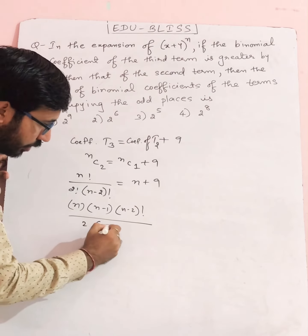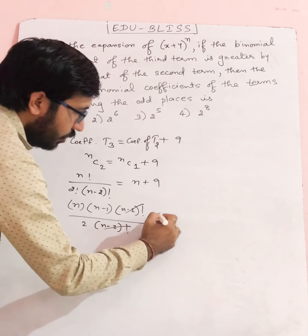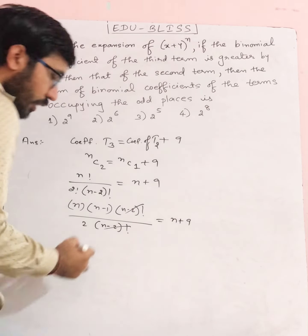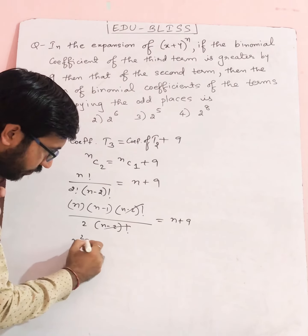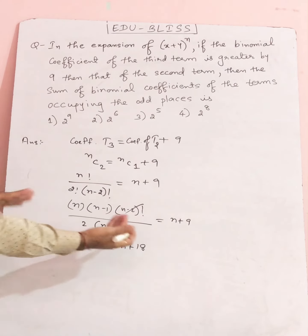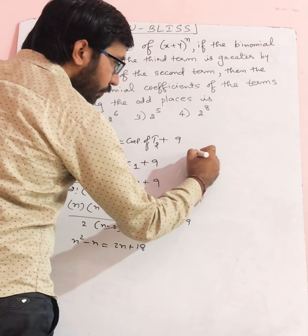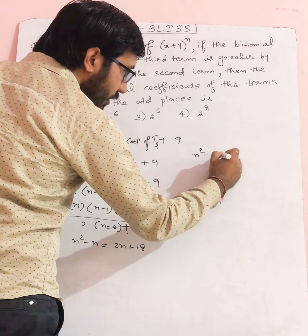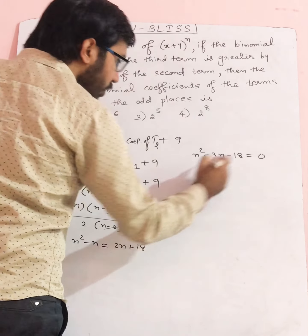So n(n-1)/2 equals n plus 9. Moving terms to one side: n² - n equals 2n + 18. Bringing everything to this side: n² - 3n - 18 equals 0.